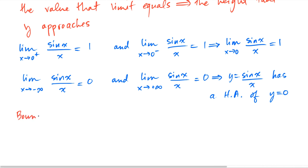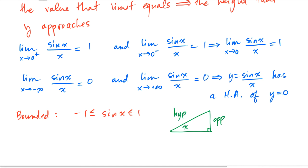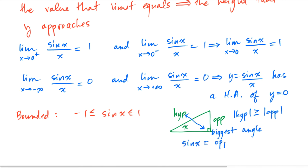Another way to understand this is to consider the boundedness of the sine x graph. The sine x graph is bounded between the heights of negative 1 and 1. For any acute angle, sine x is the opposite over the hypotenuse. Since the hypotenuse is the largest side of a right triangle, the hypotenuse can never be exceeded in magnitude by the opposite side. Therefore the sine of x, which is opposite over hypotenuse, is never going to exceed 1 in magnitude, meaning sine x is bounded between negative 1 and 1.